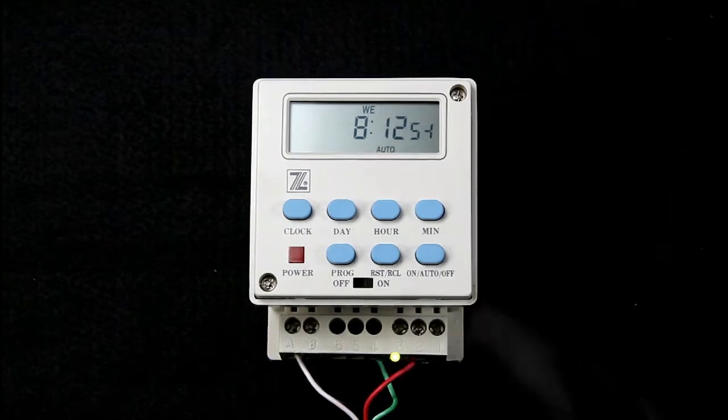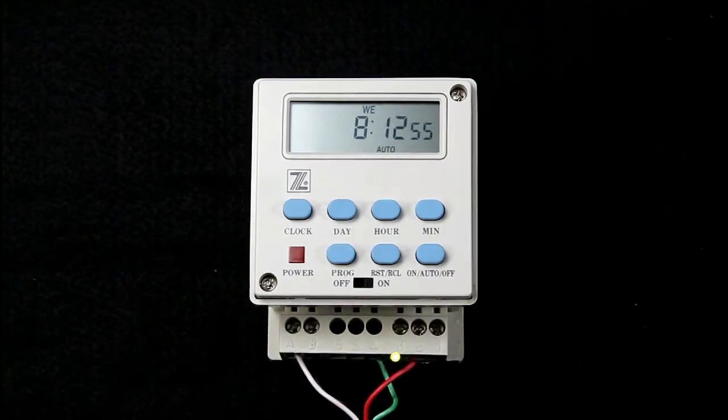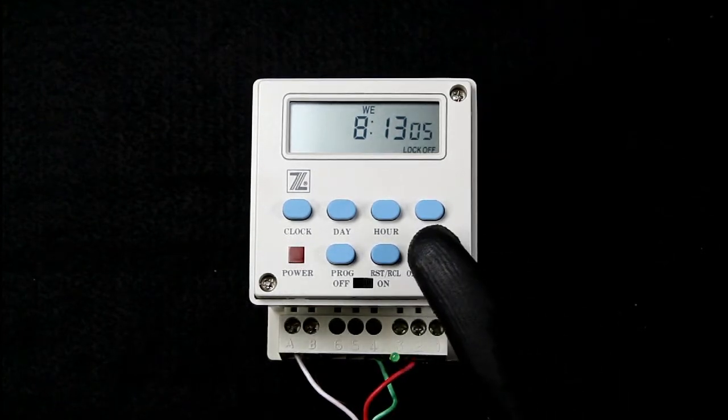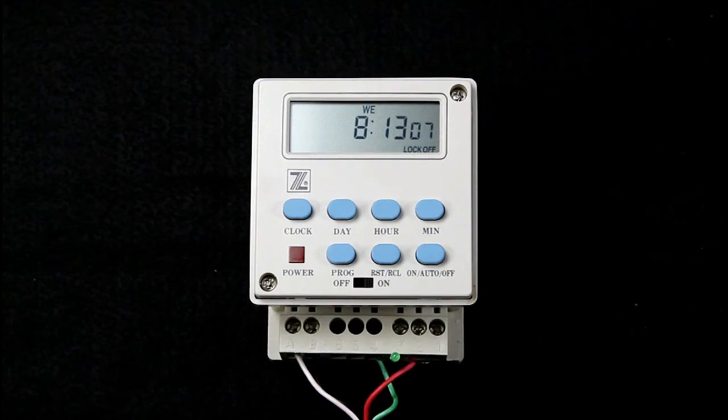Press the on, auto, off button again to show auto. Now the relay will turn off on the next programmed cycle. If you press the on, auto, off button again to lock off, this will turn the relay off and it will remain off indefinitely.